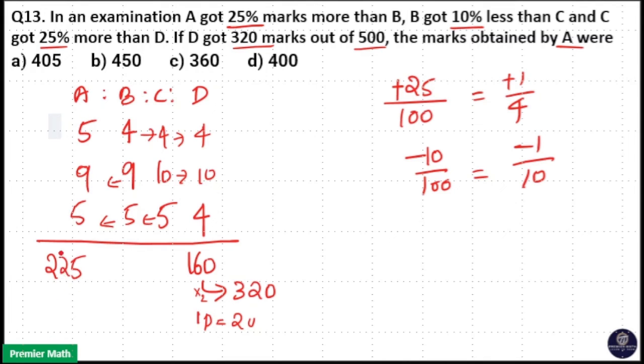So 225 into 2, 450 will be the original marks of A, that is here one part is equal to 2 units. So 225 part will be 225 into 2, 450, so option B is your answer.